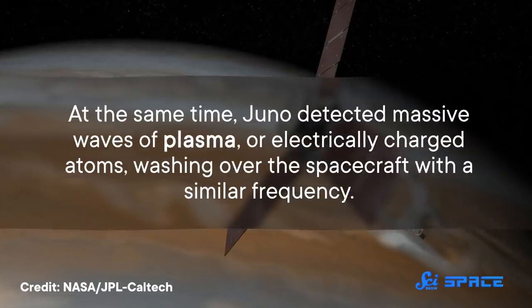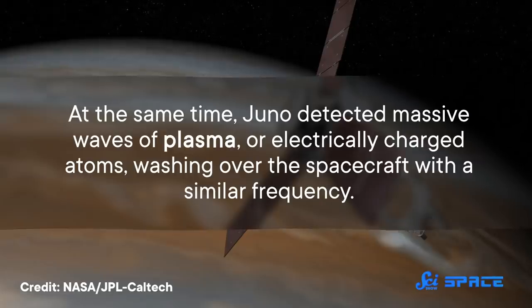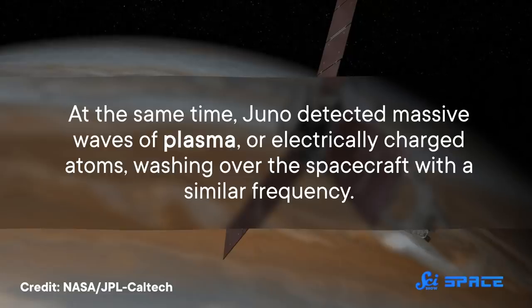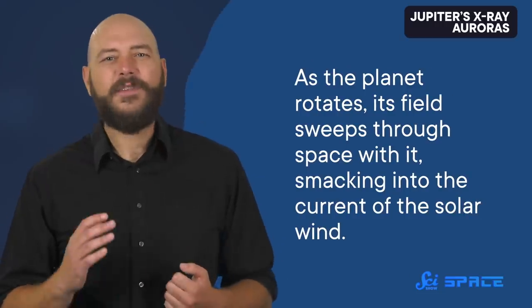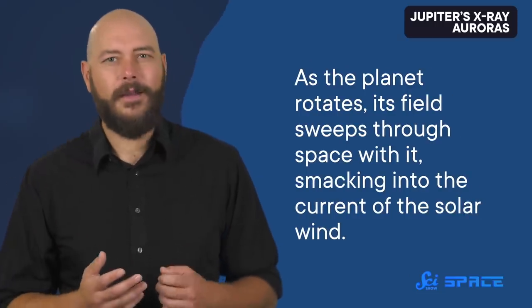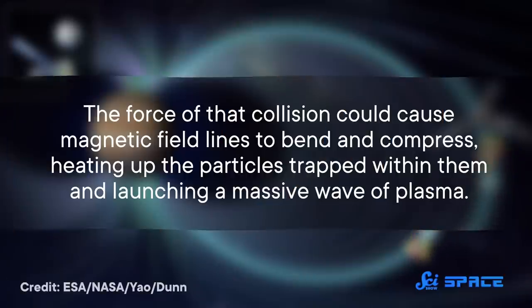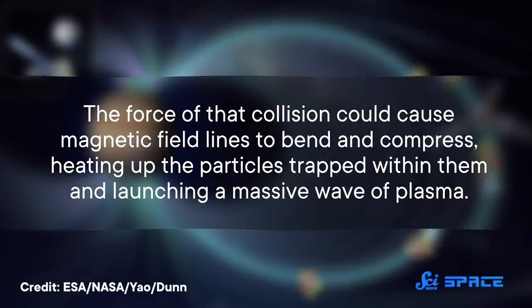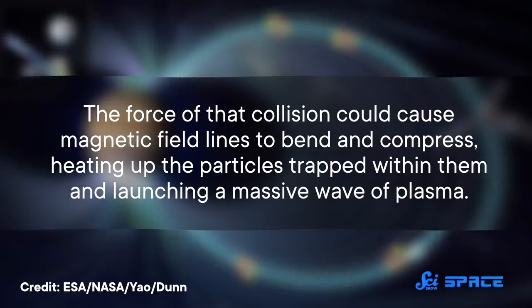At the same time, Juno detected massive waves of plasma, or electrically charged atoms, washing over the spacecraft with a similar frequency. The source of these waves is unclear, but one possibility is that they're generated by interactions between Jupiter's magnetic field and the solar wind. As the planet rotates, its field sweeps through space with it, smacking into the current of the solar wind. The force of that collision could cause magnetic field lines to bend and compress, heating up the particles trapped within them and launching a massive wave of plasma.